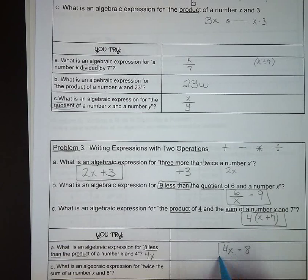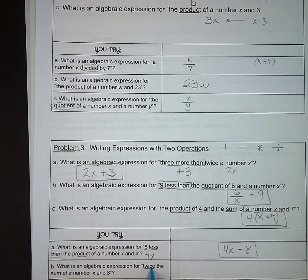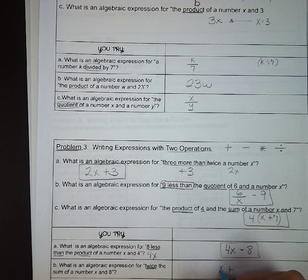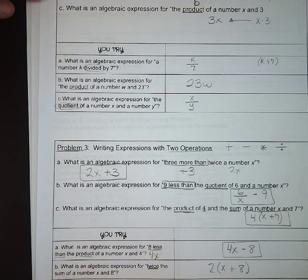Letter B, what is an algebraic expression for twice the sum of a number x and eight? So we have sum, x plus eight, and we are doubling that whole thing, so it is two times the quantity, x plus eight.